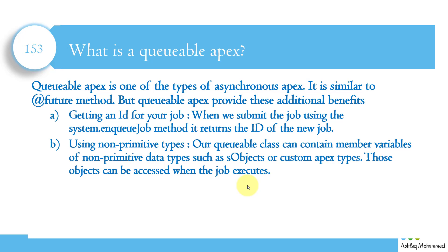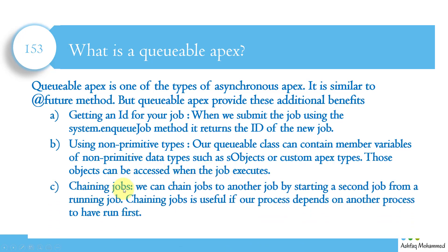Many developers don't use Queueable because Future is very easy — you just have to create a method and add the @future annotation, so most go with Future method. But I encourage you to go for Queueable whenever you have such requirements. The third benefit is chaining jobs: we can chain jobs by calling one job from another job, starting a second job from the running job. Chaining is useful if one process depends on another process to have run first.